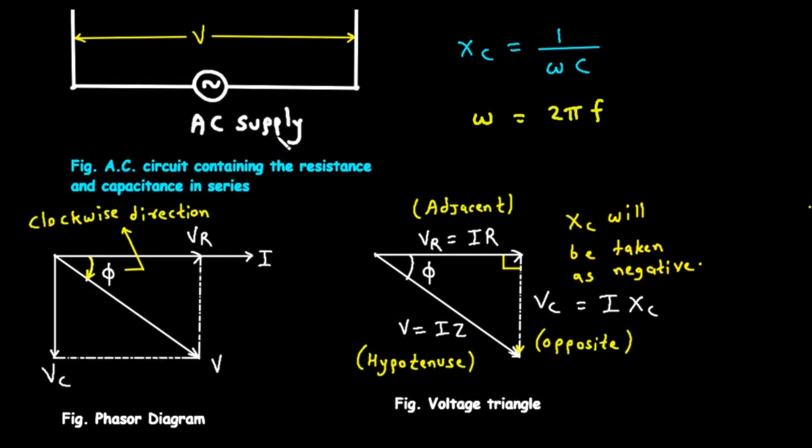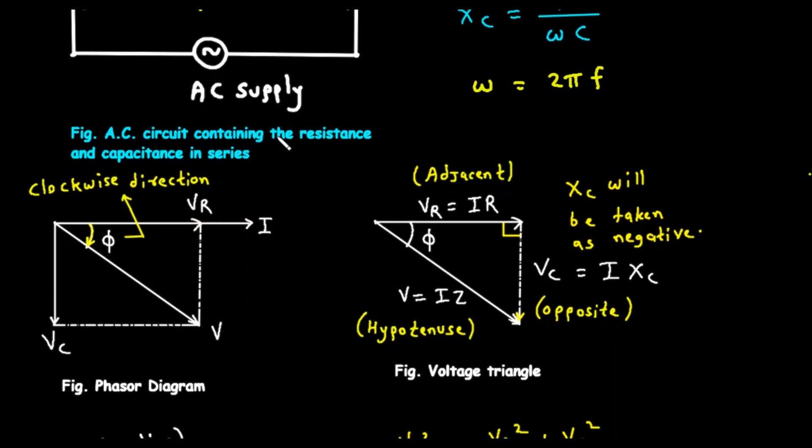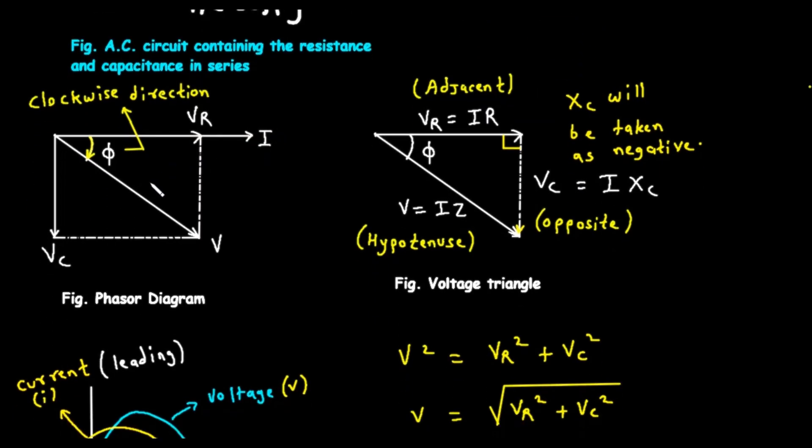To understand their relationship, we need to use a tool called a phasor diagram. Let's look at FIG. Phasor Diagram. A phasor is simply an arrow, or a vector, that represents an AC quantity. Its length represents the magnitude, and its direction represents the phase angle. Since the current I is the same everywhere in our series circuit, we use it as our reference. We draw the phasor for current I as a horizontal arrow pointing to the right.